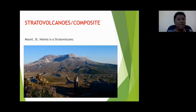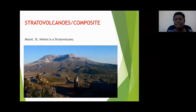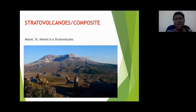Stratosphere — stratovolcano. Joelle said tall and high — you're getting closer. Delon hit the nail on the head. Strato means layers. Stratovolcanoes are made up of alternating layers. Here you see a diagram of Mount St. Helens, which is a strato or composite volcano. Notice that this volcano has alternating layers — a layer of lava, and then a layer of ash.